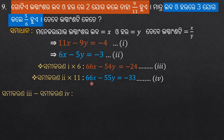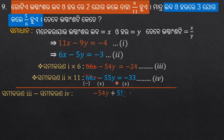Subtracting the two equations, the 66x terms cancel. We get minus 54y plus 55y is equal to minus 24 plus 33. So y is equal to 9.